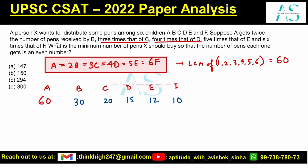Now, what is the minimum number of pens X should buy so that the number of pens each one gets is an even number? This is an odd number total. To make it even, multiply by 2. If I multiply by 2, I have to multiply all values by 2.